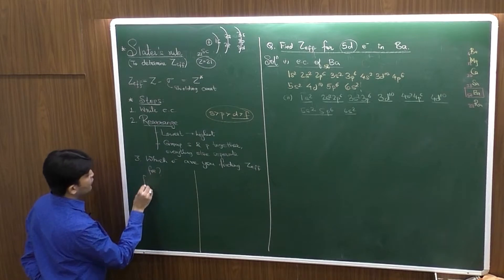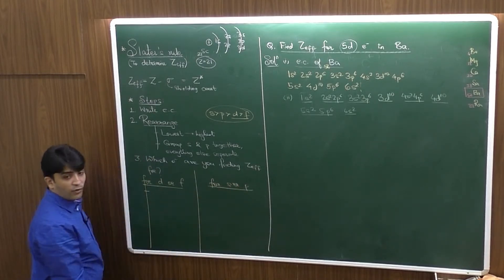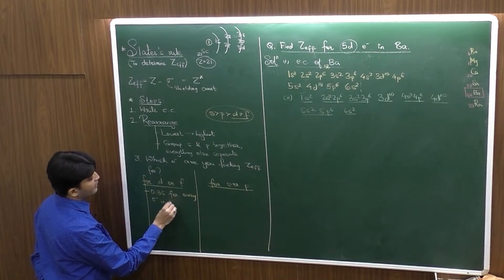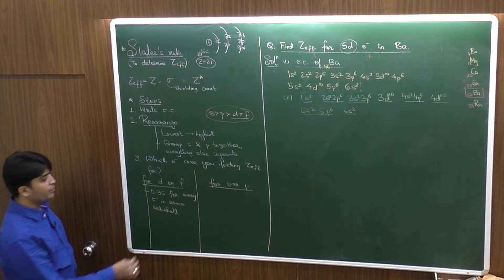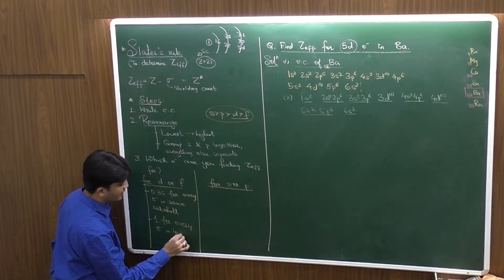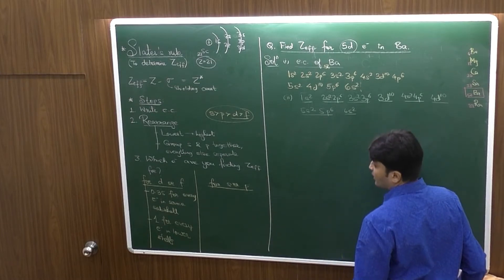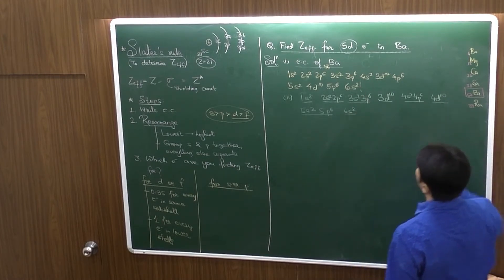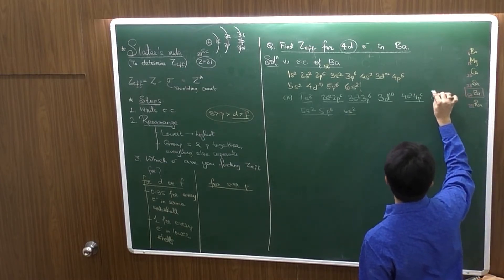So, Slater made separate rules. If the electron is D or F, the rule is separate. If the electron is S or P, the rule is separate. And two separate rules. This is for D or F first, and for S or P. What is the rule? For D or F electron, subtract 0.35 for every electron in same sub shell. Sorry, there is no 5D electron, no? Sorry.